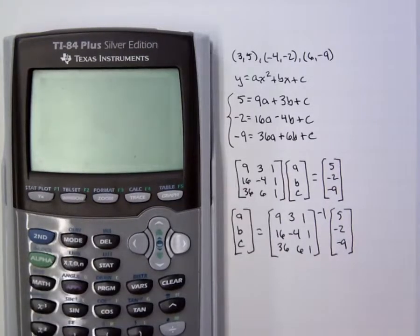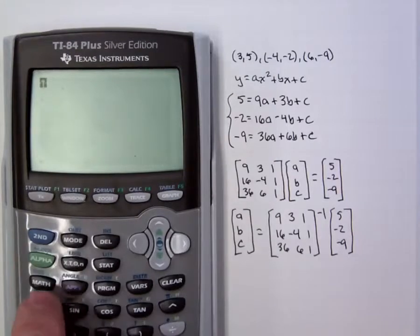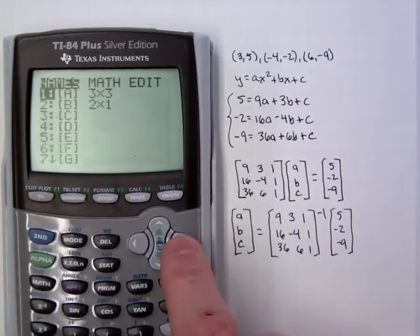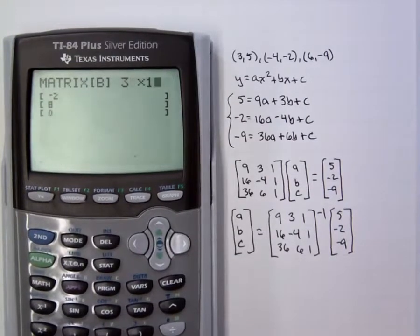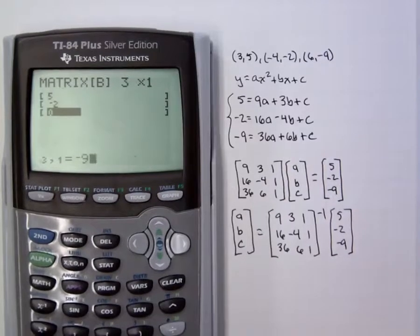Now we'll quit the second mode and we'll go back in again using second matrix over to edit, this time down to B. And we need that to be 3 by 1, so we'll set those dimensions. And then we have the 5, the -2, and the -9.